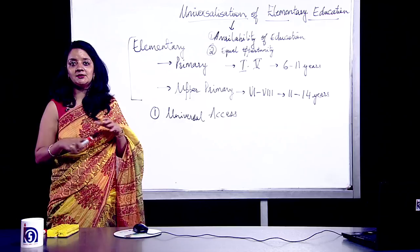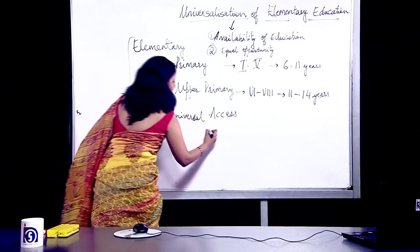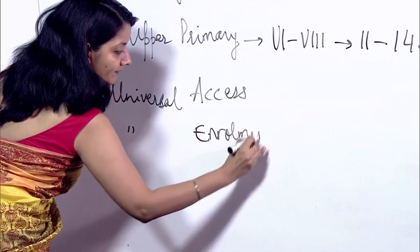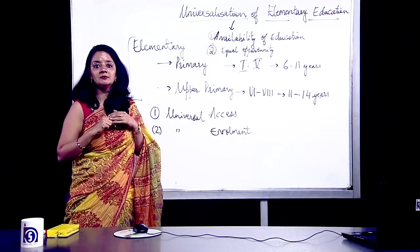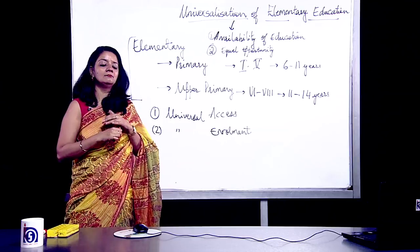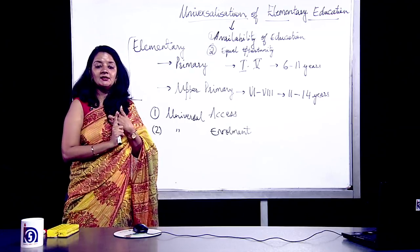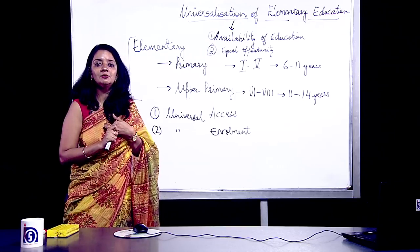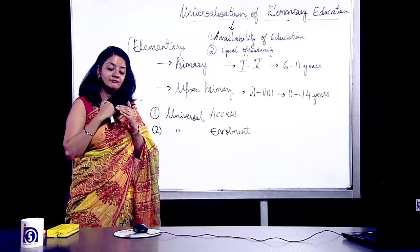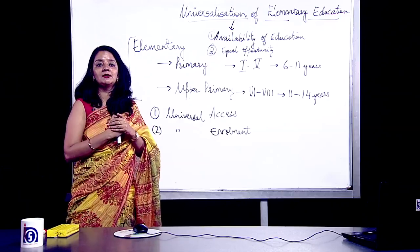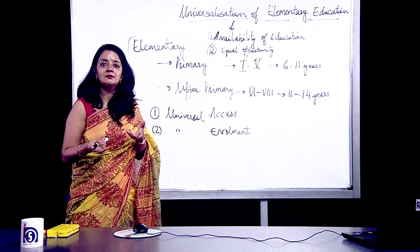The second component is universal enrollment. Under universal enrollment, we cannot deny anyone admission. We cannot tell a child they cannot join a school because of their caste or poor background. If a child can afford the fees, nobody can deny them. And if education is free of cost, you certainly cannot deny a child on the basis of economic background.